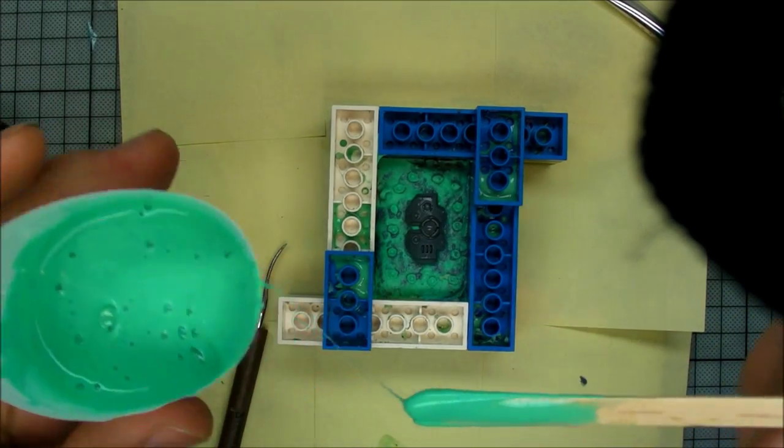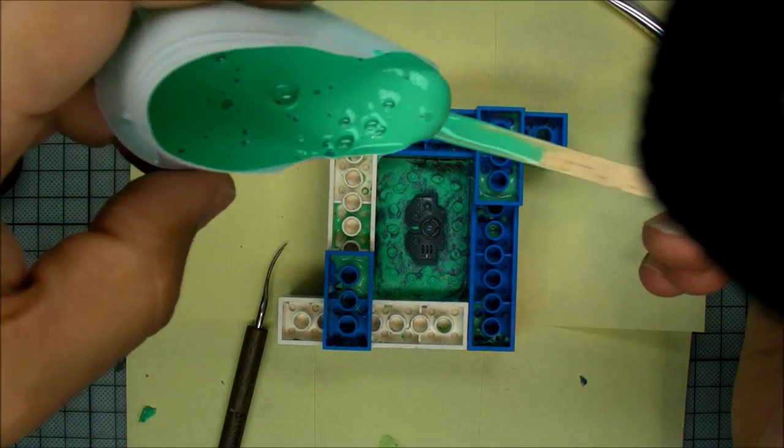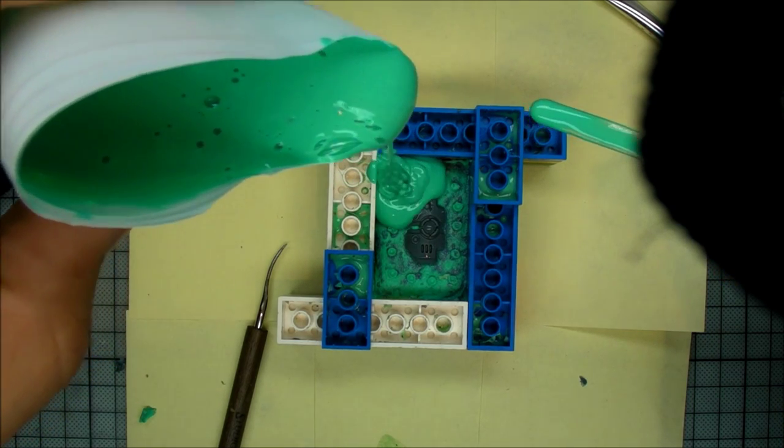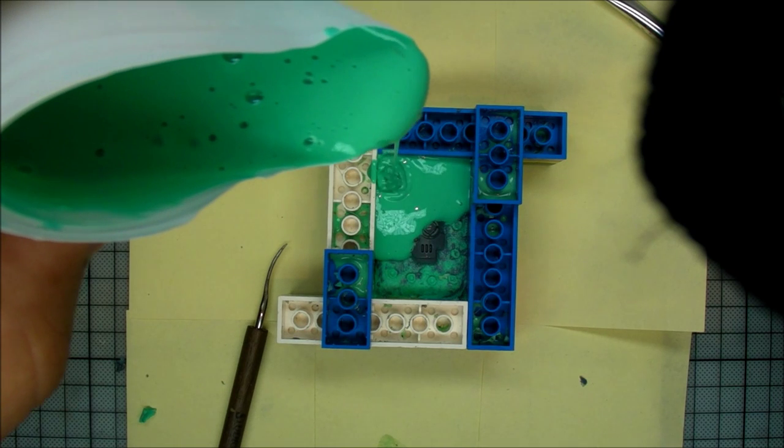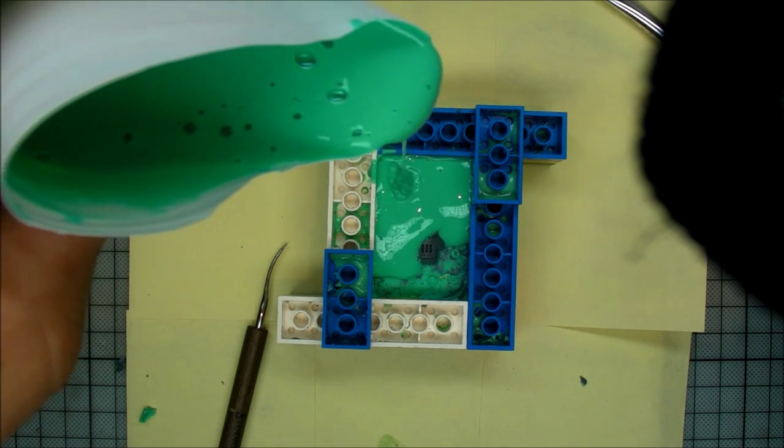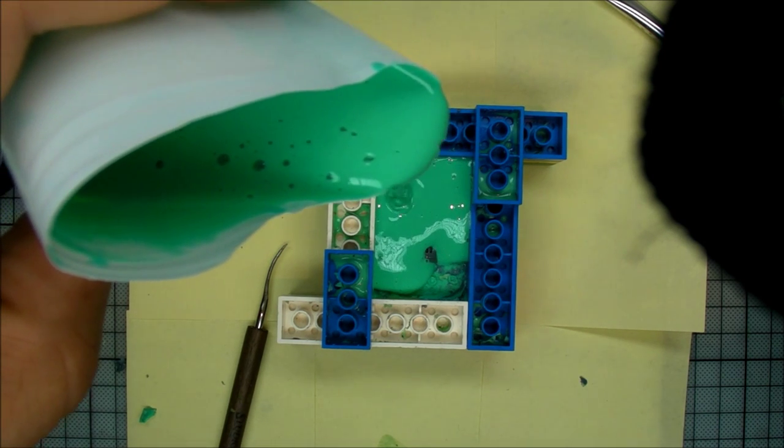All right, and here we go, pouring it from the side in as thin a stream as possible. I missed it a little bit. You can actually see how it now flows over the part and also into all of the little nooks and crannies.